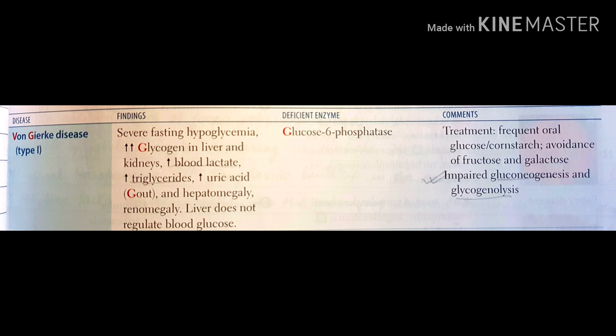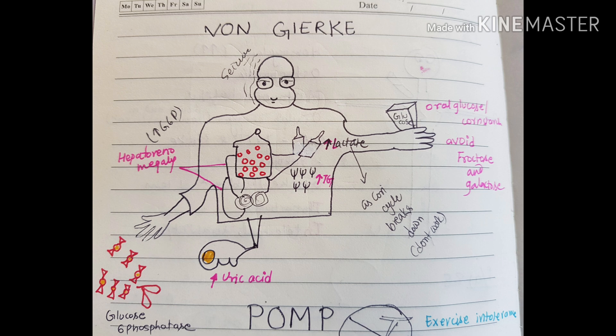These are just words, so how are you going to remember all this information? By looking at my cartoon. This cartoon tells you every single piece of information about Von Gierke disease. He's a geek character, and you can see the deficient enzyme is glucose-6-phosphatase.